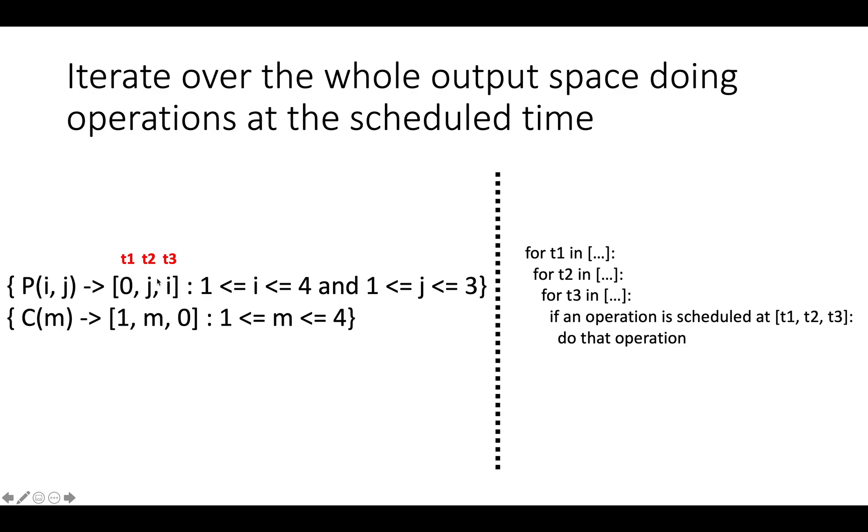And we're going to have for t1 in some bounds, for t2 in some bounds, for t3 in some bounds, basically iterating over every single point in this three-dimensional space. If an operation is scheduled at time t1, t2, t3, then do that operation.